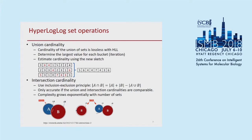Importantly, with sketches in general you can often do computation in a distributed fashion and then merge the sketches later. For the case of union cardinality with HyperLogLog, suppose you have three different sets. You run HyperLogLog on each, and then to merge the sketches you just take the maximum value in each bucket. This turns out to be exactly the same result you would get had you run HyperLogLog on the union of these sets to begin with.